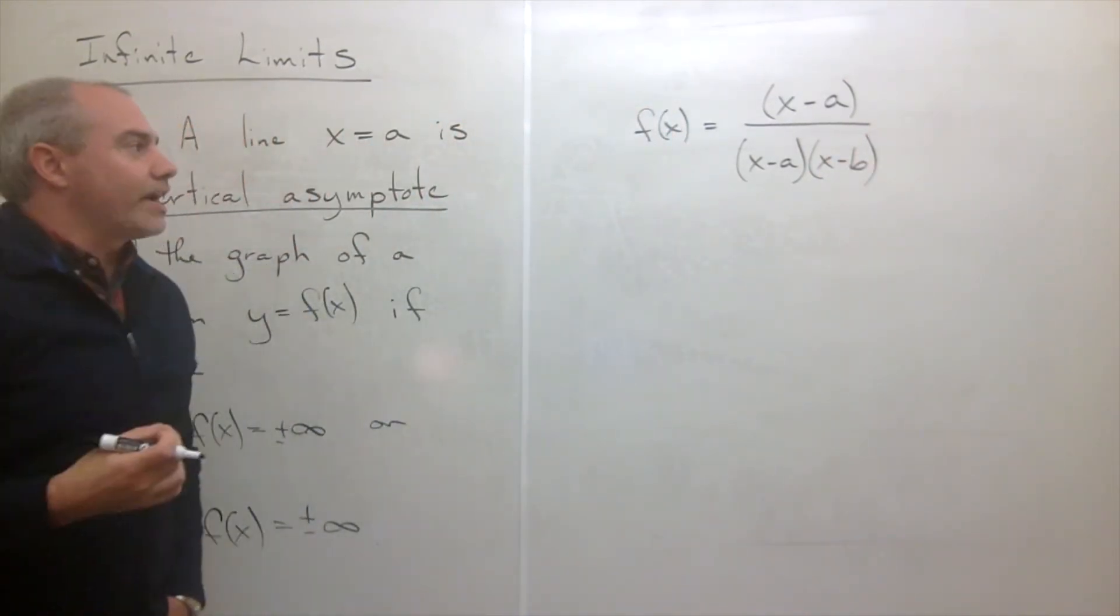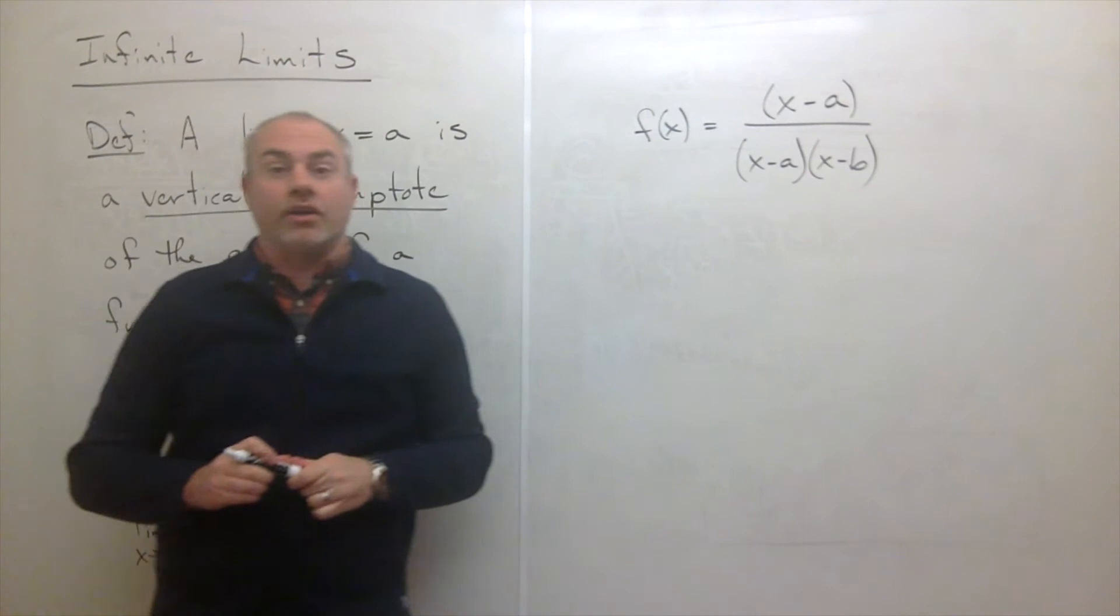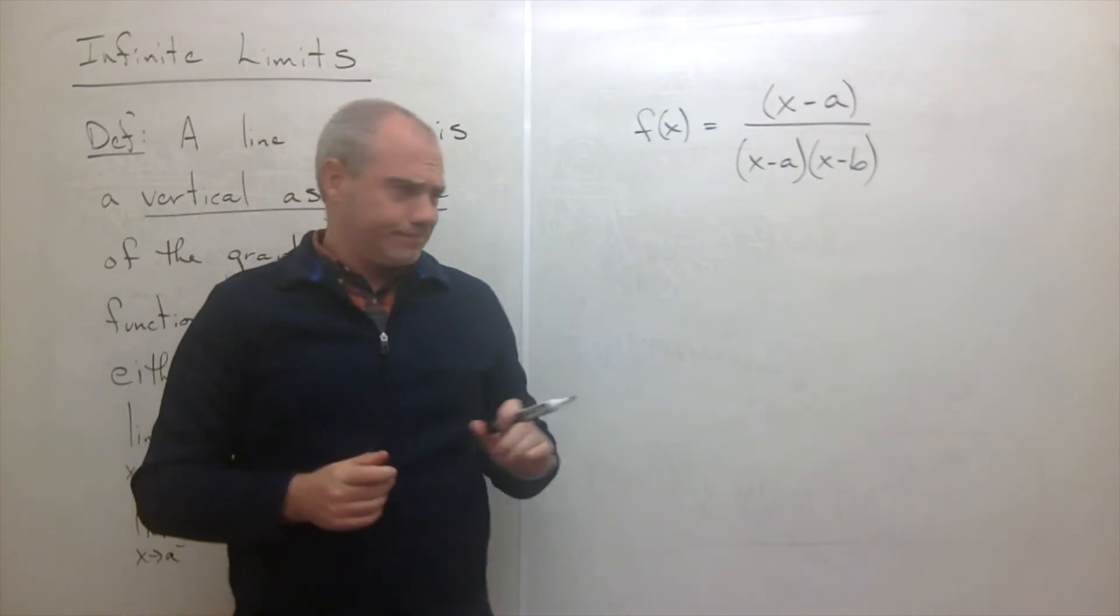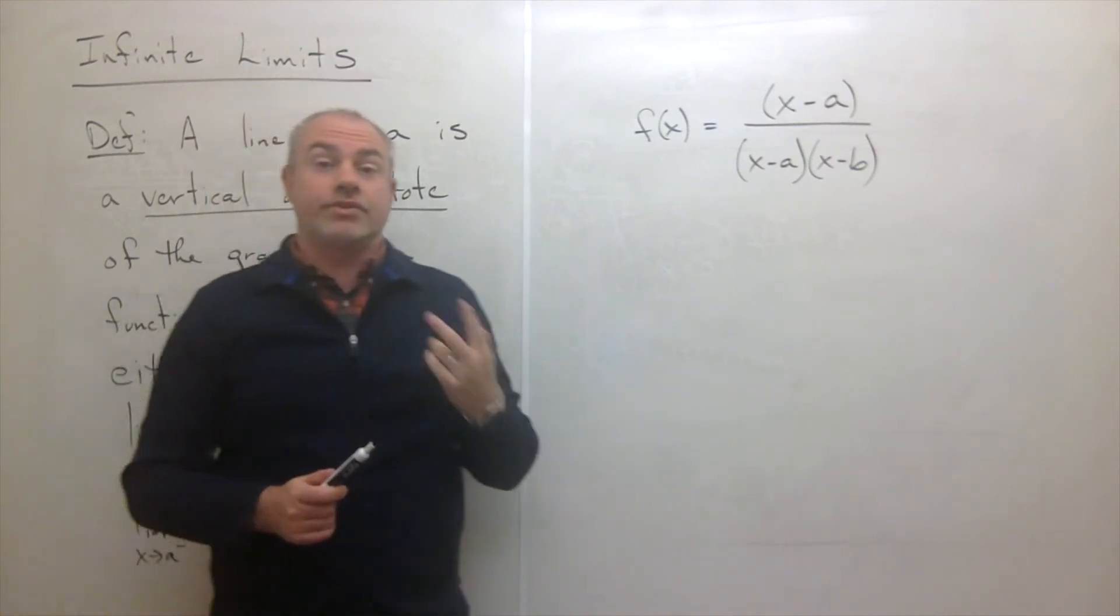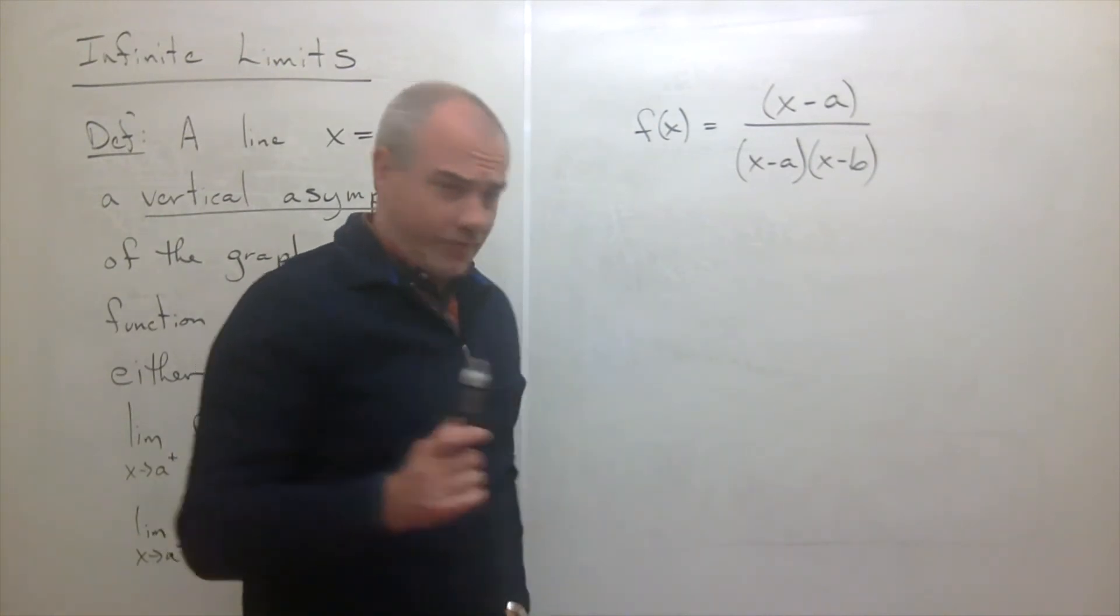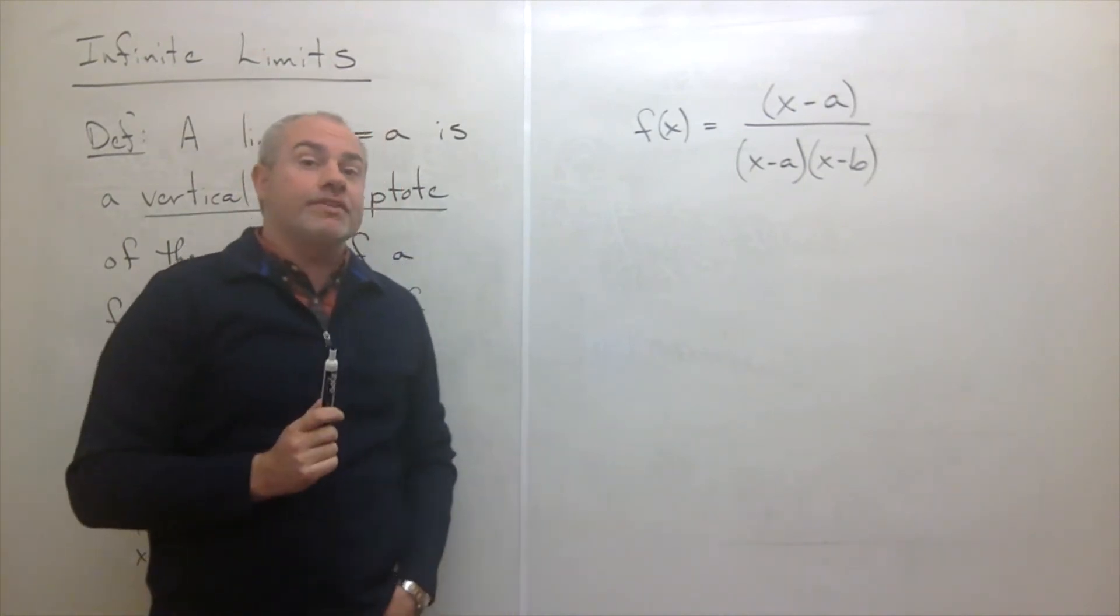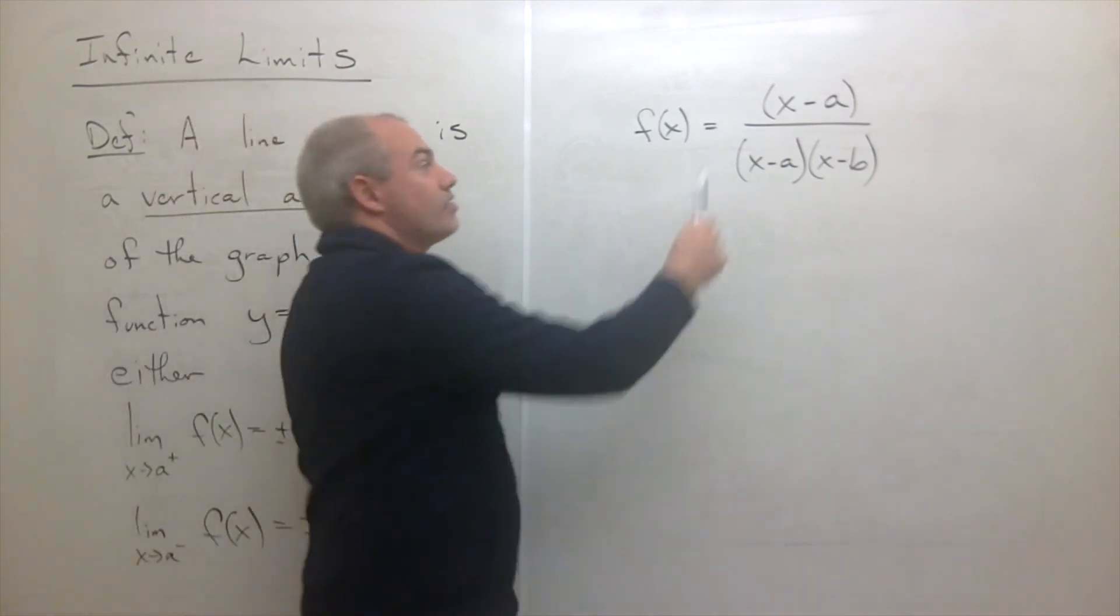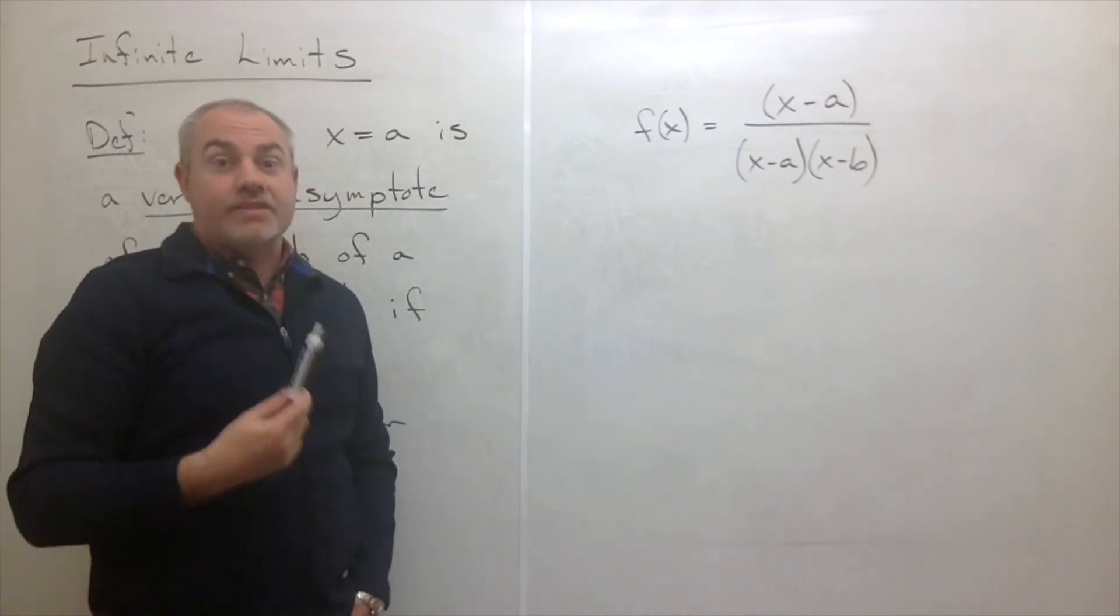Would I be able to recognize right off the bat where this function has a vertical asymptote? Well, what you're really looking for when you're looking for vertical asymptotes is there something that makes the bottom zero? And in this case there are two things that make the bottom of this function zero. One of them is a, and one of them is b. But there's a difference between x minus a and x minus b in this case, and that is what's happening on the top. And on the top, I also have an x minus a.